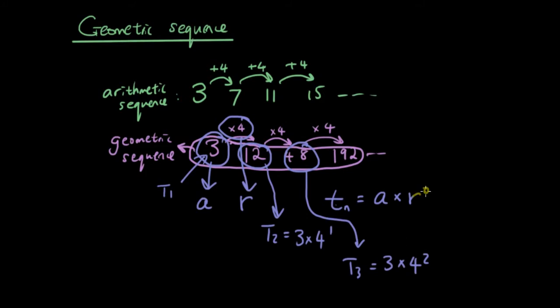So whatever we multiply r to the power of, this number here is always 1 unit less than n, the nth term that we're trying to find, so we're just going to write n-1 in the formula. So that is the geometric sequence formula that you need to memorize.